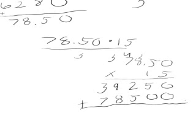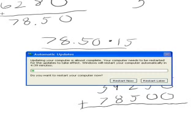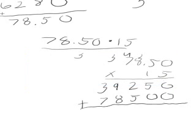Now you add them again. Zero plus zero is zero, five plus zero is five, two plus five is seven, nine plus eight is seventeen carry the one, three plus seven equals ten plus one equals eleven carry the one. There's two numbers behind the decimal place, so there has to be two numbers behind the decimal place in our answer.